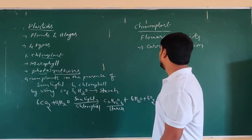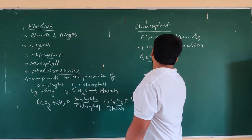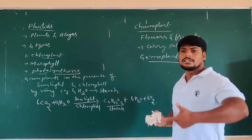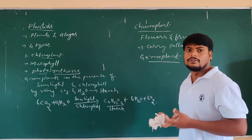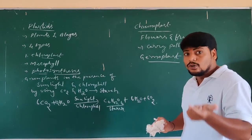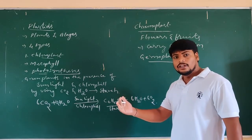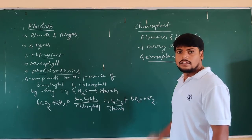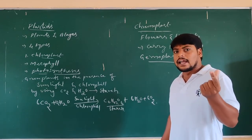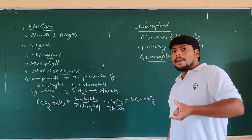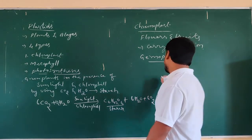That is the important function of chromoplast. Another important type is gerontoplast. When there is no sunlight reaching the plant, they cannot carry out photosynthesis. If the plants do not carry out photosynthesis continuously, the chloroplast found in the leaf converts into gerontoplast.